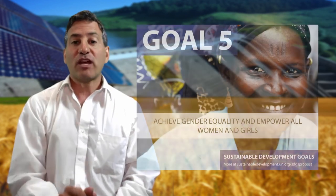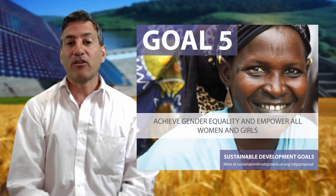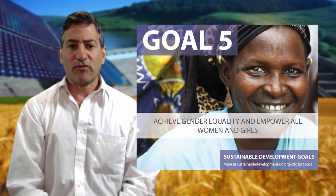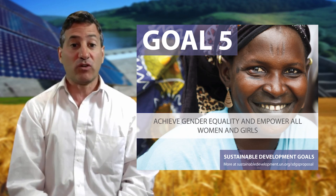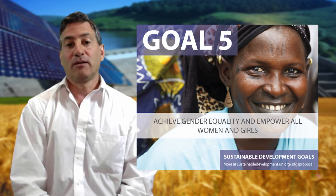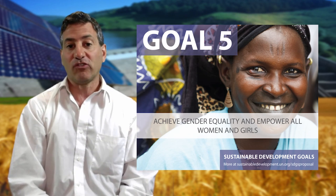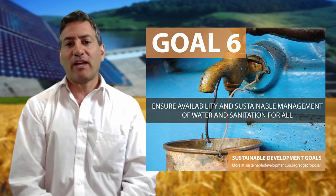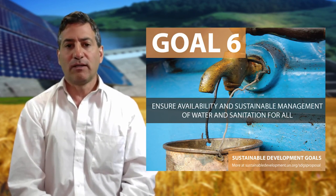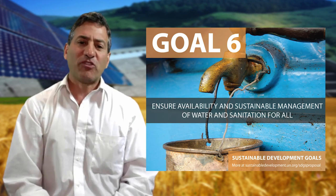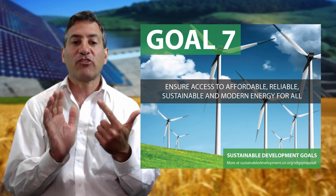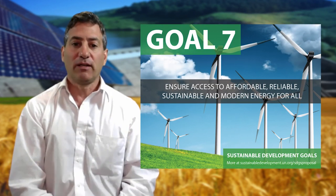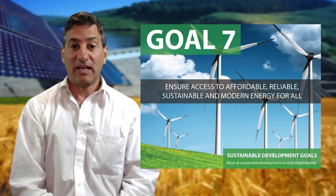Goal five: achieve gender equality and empower all women and girls. It can be argued that given that provision, maintenance, and preparation of food and water have been traditionally female domains, along with fetching and utilizing domestic energy sources, the FEW nexus can be a tool of empowerment for women. Goal six: ensure availability and sustainable management of water and sanitation for all — addressed specifically by the FEW nexus. Goal seven: ensure access to affordable, reliable, sustainable and modern energy for all — again, implicit in our nexus.